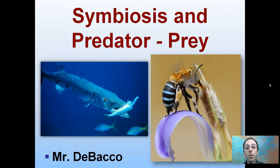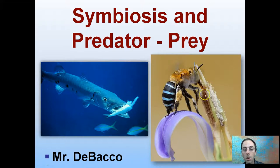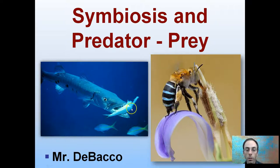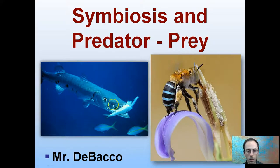Here we're looking at symbiosis and predator-prey relationships. Here's an example of symbiosis: we've got the bee pollinating this flower. And predator and prey — it's always a bigger fish. Here's a barracuda feeding on some sort of bait fish here.